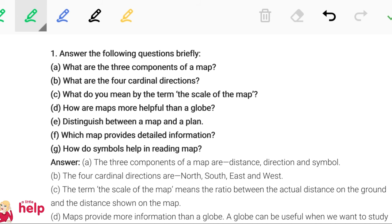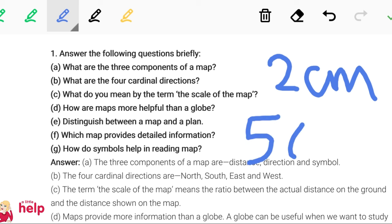What do you mean by the term 'the scale of a map'? Students, the scale of a map means the ratio between the actual distance on the ground and the distance shown on the map. For example, if 2 cm on the paper shows 50 km on the ground, that is the scale.